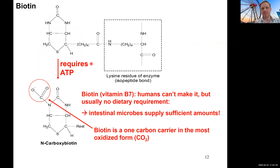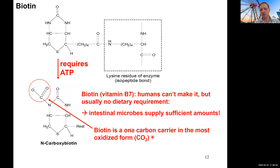This is what biotin looks like. It's an enzyme-bound cofactor — you do not need to recognize or draw the structure. I only want you to understand what it does. It's vitamin B7. We cannot make it ourselves, but we don't need to get it from our diet because our intestinal microbes supply us with biotin. What's most important to remember is that biotin is a one-carbon carrier, and in most cases it carries carbon dioxide. Using ATP energy, we bind carbon dioxide in the form of bicarbonate to biotin, and biotin then transfers it to the substrate — this is how we incorporate carbon dioxide via biotin into pyruvate to make oxaloacetate, OAA.